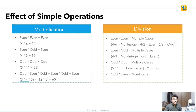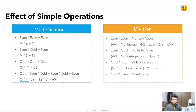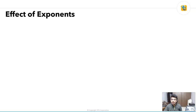For division, there are multiple cases. An even divided by an even can give a non-integer (e.g., 4÷6 = 1.5), an even (e.g., 4÷2 = 2), or an odd (e.g., 6÷2 = 3). Similarly, an even divided by an odd yields multiple cases. An odd divided by an odd may give a non-integer or an odd number. Importantly, an odd number divided by an even number always gives a non-integer — the GMAT tests this.